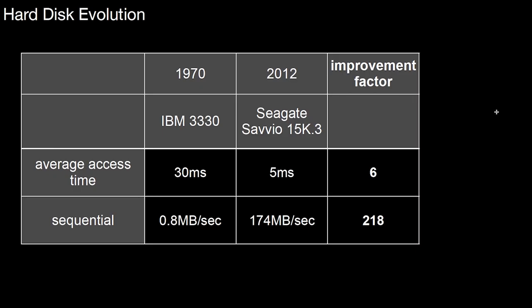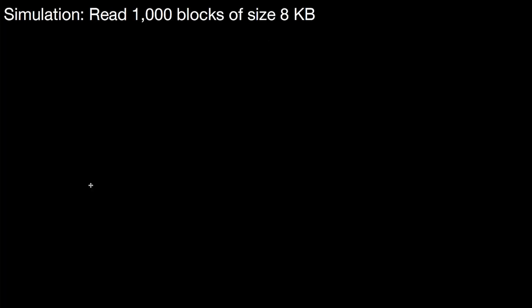When you look at hard disk evolution, you observe how different types of accesses evolved over time. I'm depicting two hard disks, one from 1970, an IBM hard disk, and one from 2012, which is one of the best. In 1970, the device had an average access time of 30 milliseconds and sequential read performance of 800 kilobytes per second. The Seagate of today has 5 milliseconds average access time and 174 megabytes per second sequential read. Average access time improved by a factor of 6 in those 42 years, whereas sequential read performance improved by a factor of 218. That's a huge gap in how different types of accesses improved.